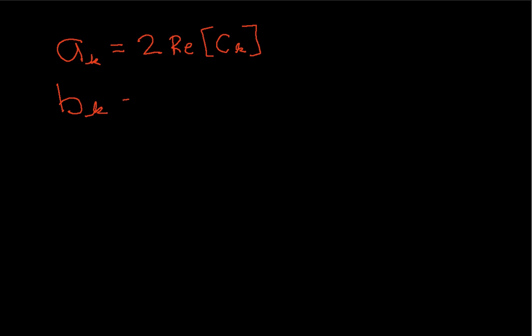b sub k is equal to 2 times the imaginary part of c sub k, and I was afraid I'd do that. There's actually a negative sign there. And so, there's this relationship between the real and imaginary parts of the complex exponential Fourier series and the coefficients of the trigonometric Fourier series.